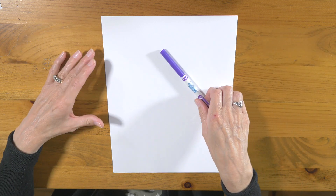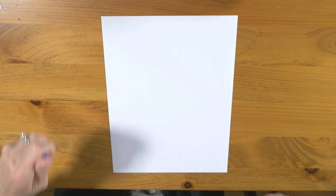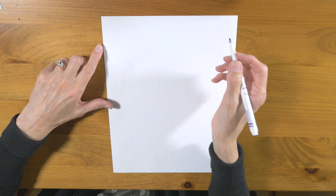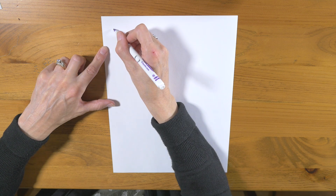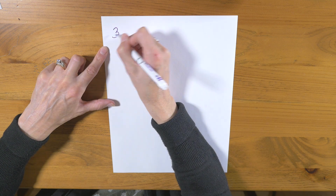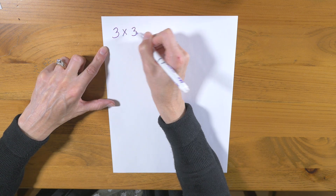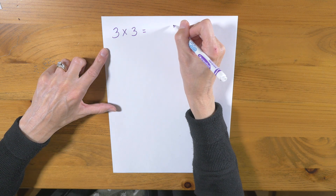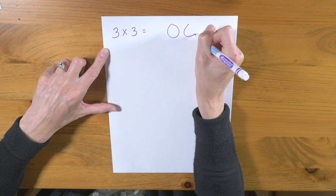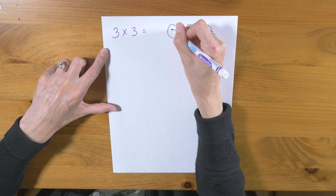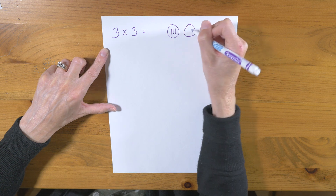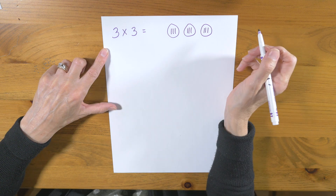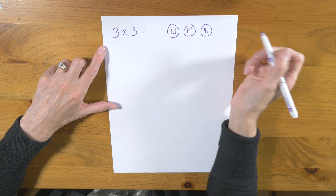I'm going to do some examples here to show you what I mean. We're going to start with 3 times 3. I'm going to draw my groups out: 3 groups with 3 inside, and as I mentioned it's like repeated adding.